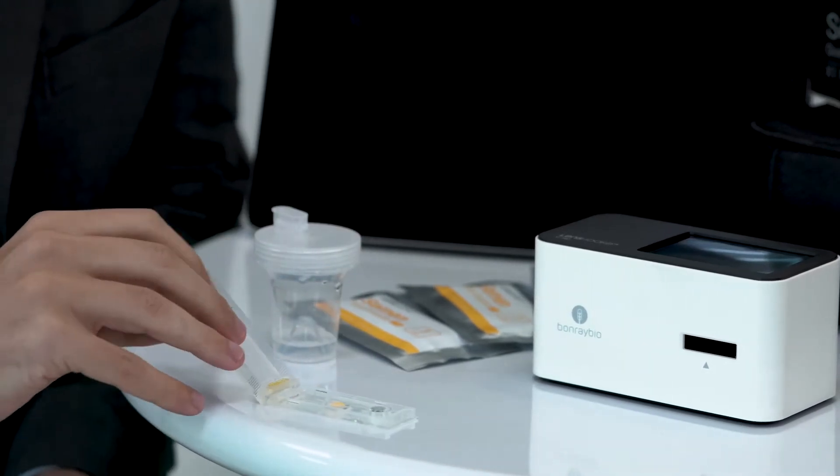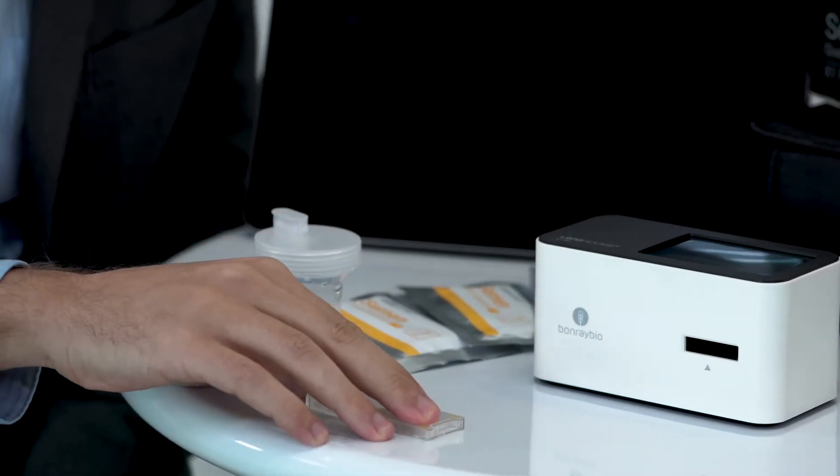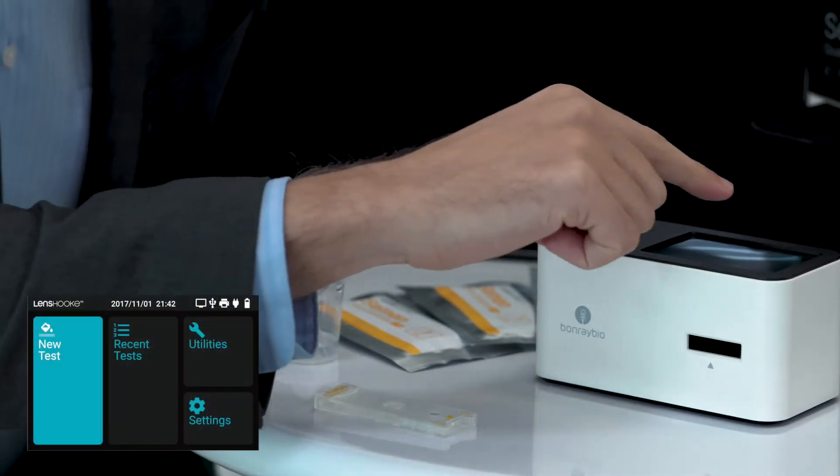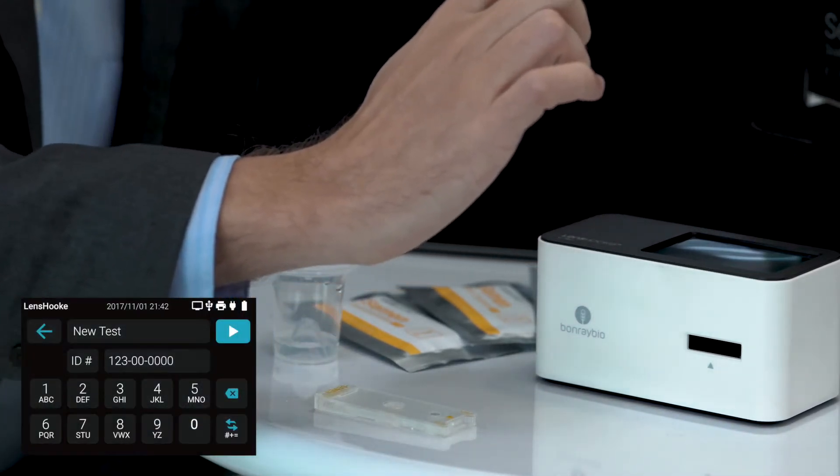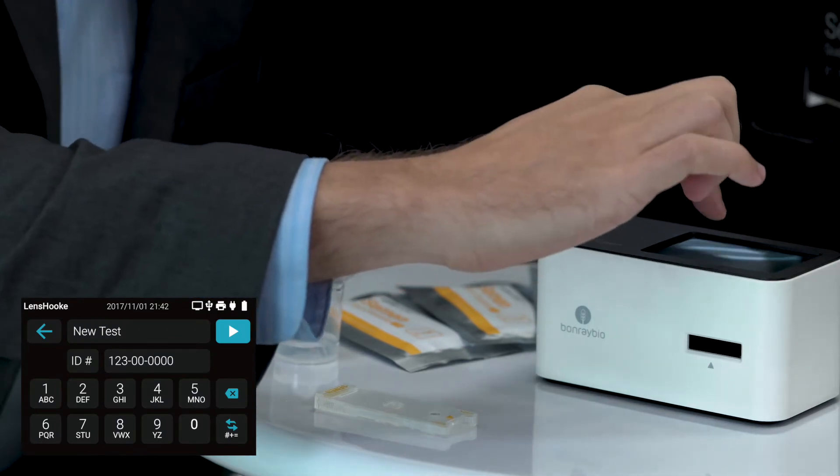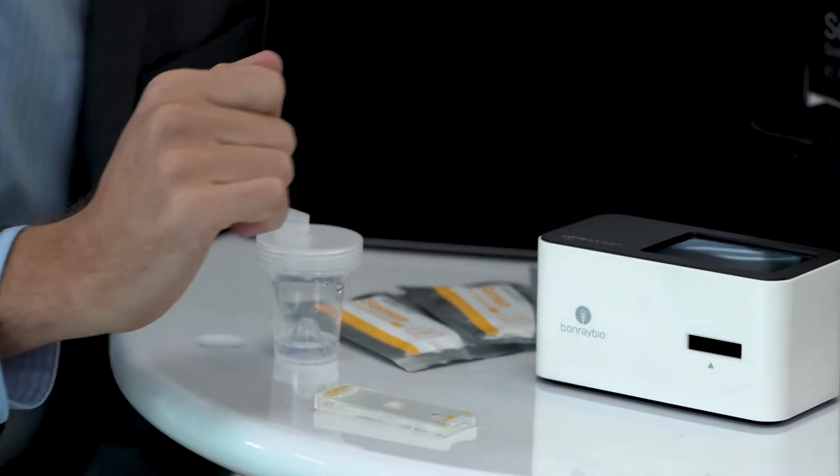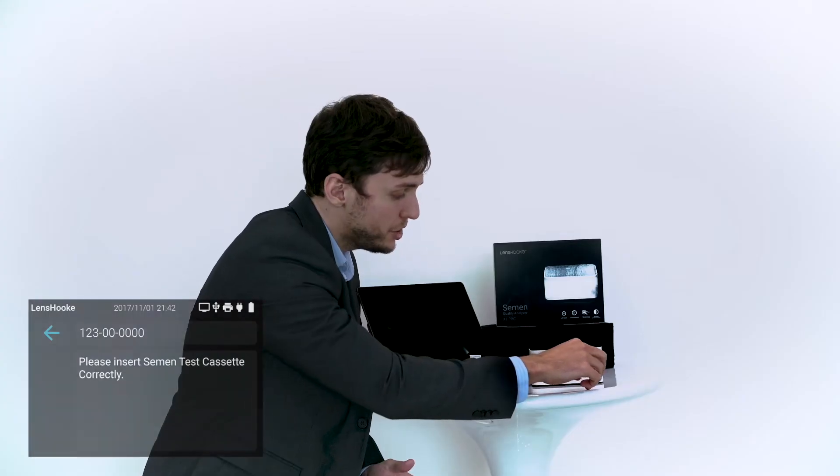Then close the cassette tightly, and on the screen press New Test, followed by entering the patient's ID. The screen will then instruct you to insert the test cassette into the machine.